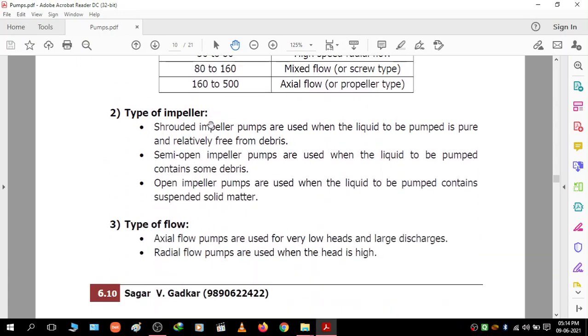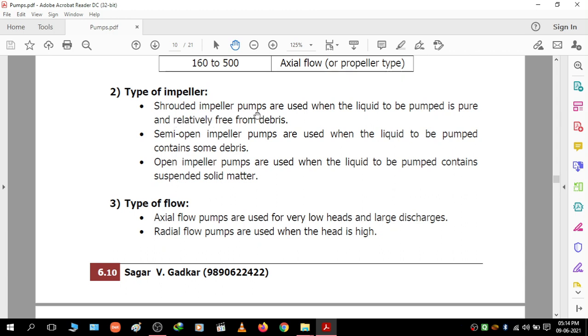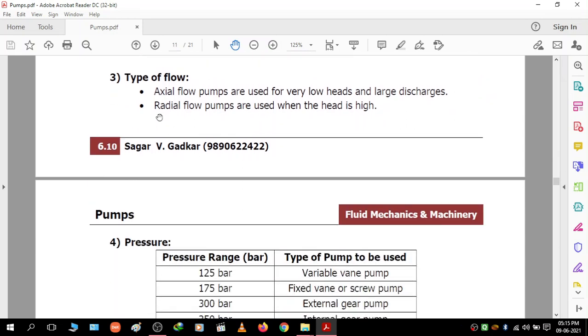Selection based on type of impeller: Shrouded impeller pumps are used when the liquid to be pumped is pure and relatively free from debris. Semi-open impeller pumps are used when the liquid contains some debris. Open impeller pumps are used when the liquid contains suspended solid matter. For type of flow: axial flow pumps are used for very low head and large discharges, while radial flow pumps are used when the head is high.